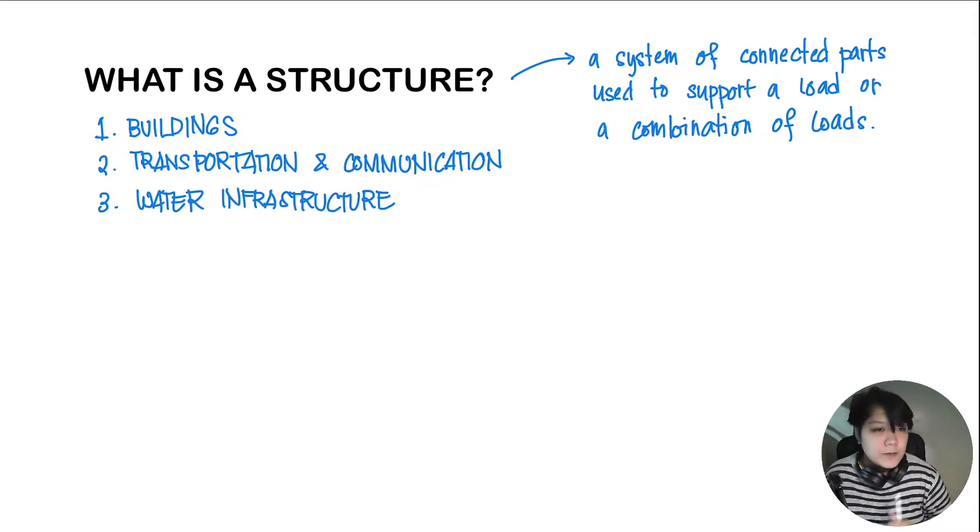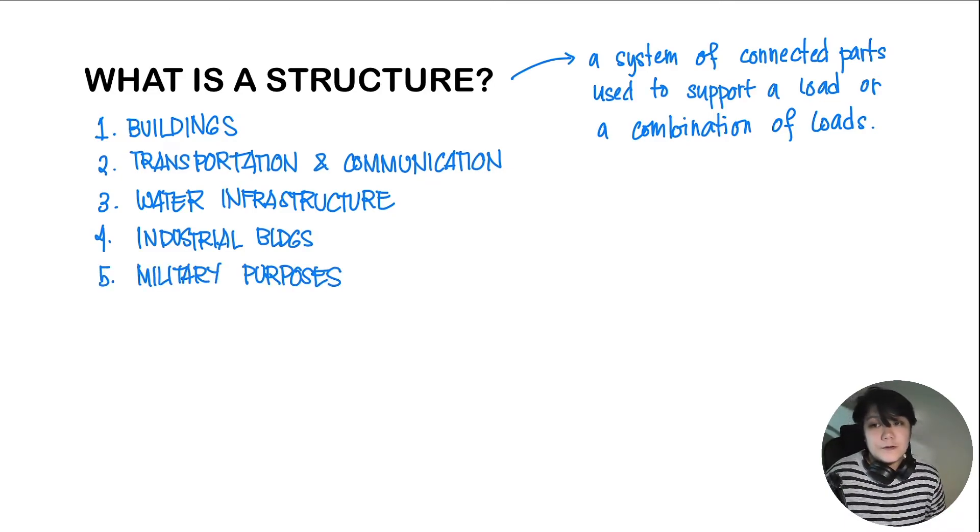The next type of structure that we deal with is for the industrial sector. This is called our industrial buildings, which mainly includes our factories. Even the cold storages that we use to store vaccines could fall under industrial buildings. And then the next type would be for military purposes, which could be any type of infrastructure or structures that are used by the armed forces.